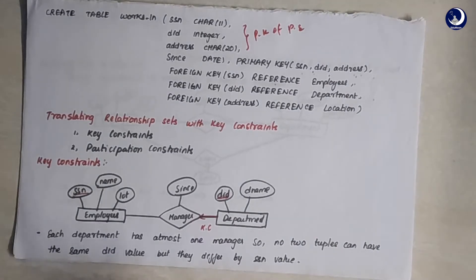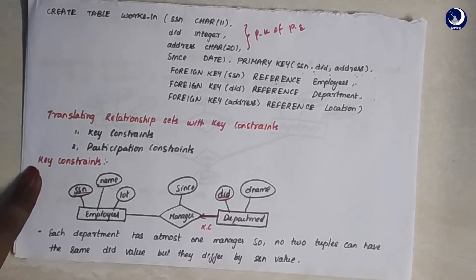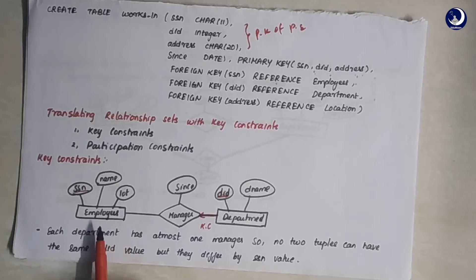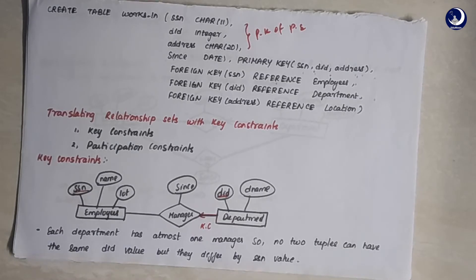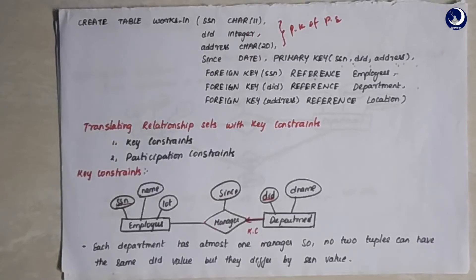Now let's see transformation with constraints. In an ER model, we have two constraints: the key constraint and the participation constraint. For the key constraint, the diagram depicts an arrow from department to manager, meaning each department has at most one manager. When transforming this ER model into a table, we must ensure each department has at most one manager. In the managers relationship, there should be no two employees with the same DID, so we make DID the primary key to avoid repetition of similar DIDs.